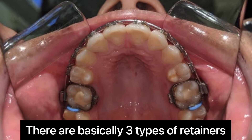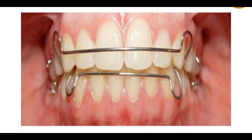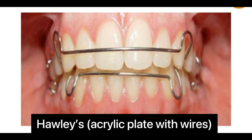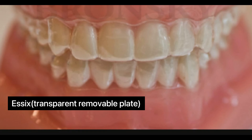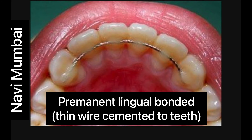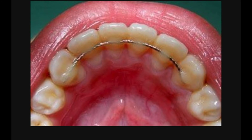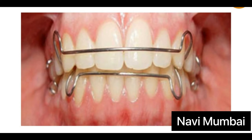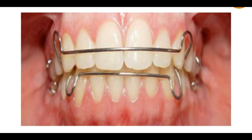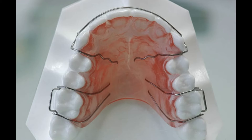There are basically three types of retainers. Number one, Hawley's acrylic plate with wires. Number two is Essix, transparent removable plate. And number three is permanent lingual bonded retainer — that is, a thin wire cemented to the inside part of the teeth. You can see in the picture. Various types of modifications of Hawley retainers can also be made by wire modification depending on the need.